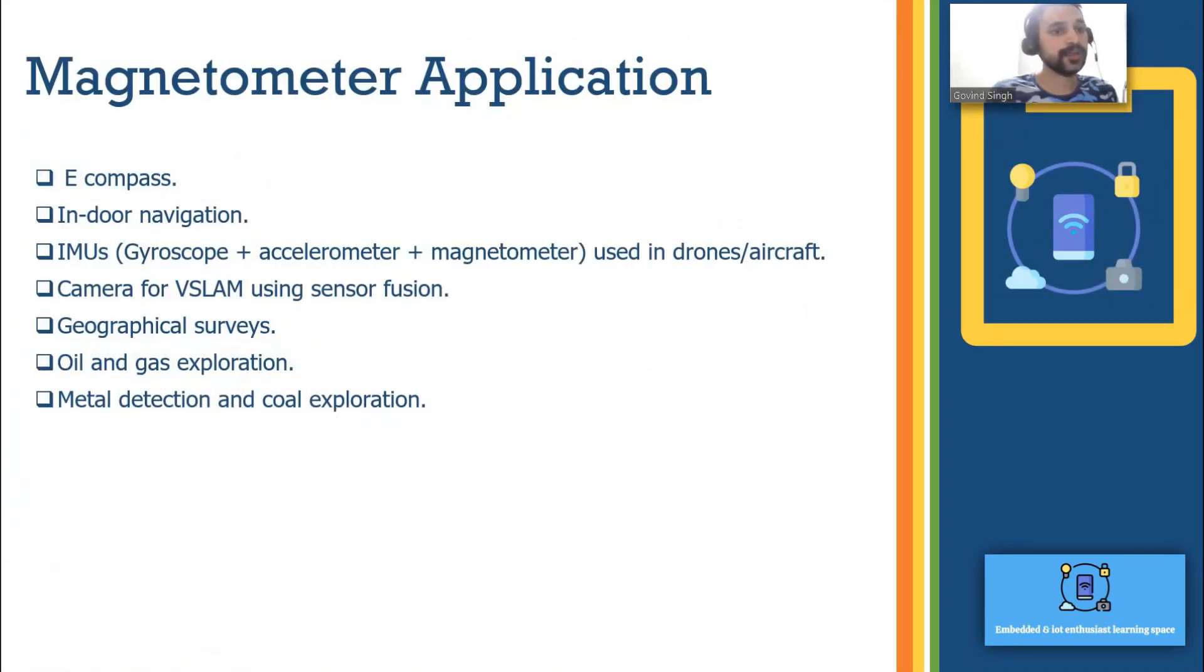Let's discuss the key applications with respect to MEMS magnetometer. One of the main applications that we can use for navigation is e-compass. E-compass is one of the key applications and we do this with tilt compensation.